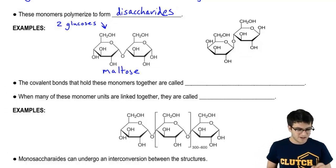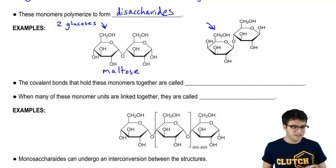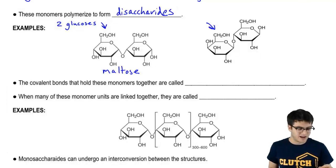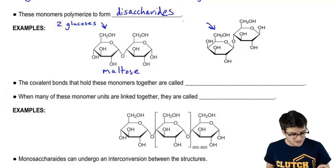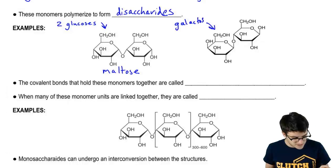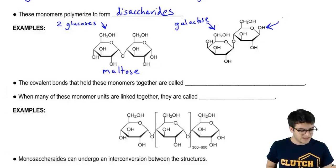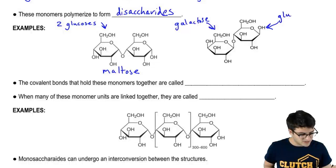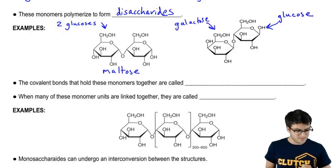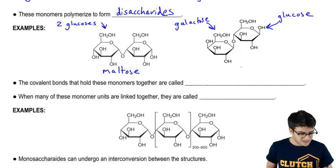Now over here, we have a slightly different disaccharide. You see, this molecule is galactose and this monomer is glucose. This disaccharide is called lactose.